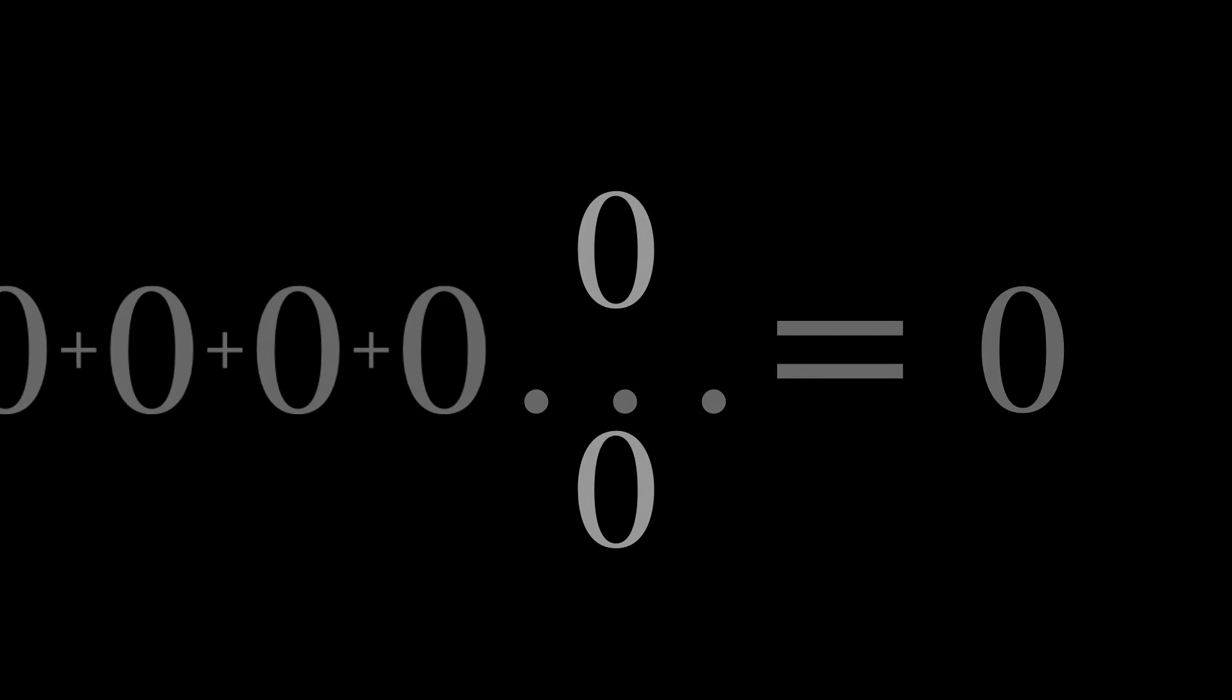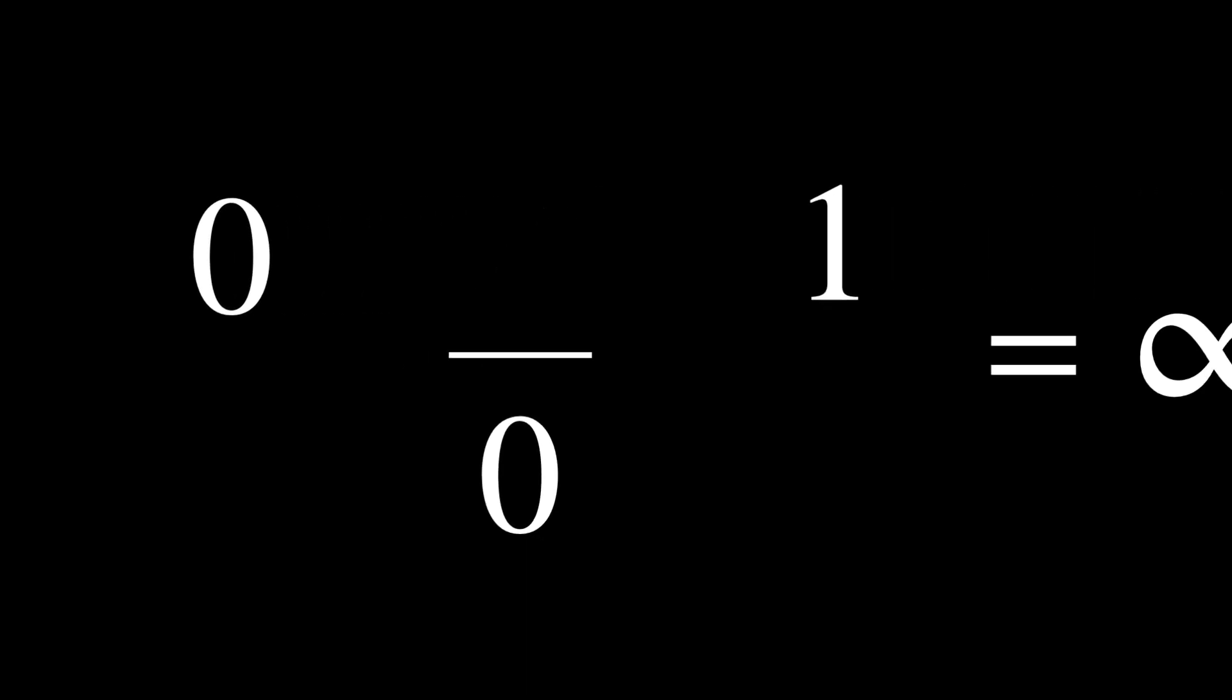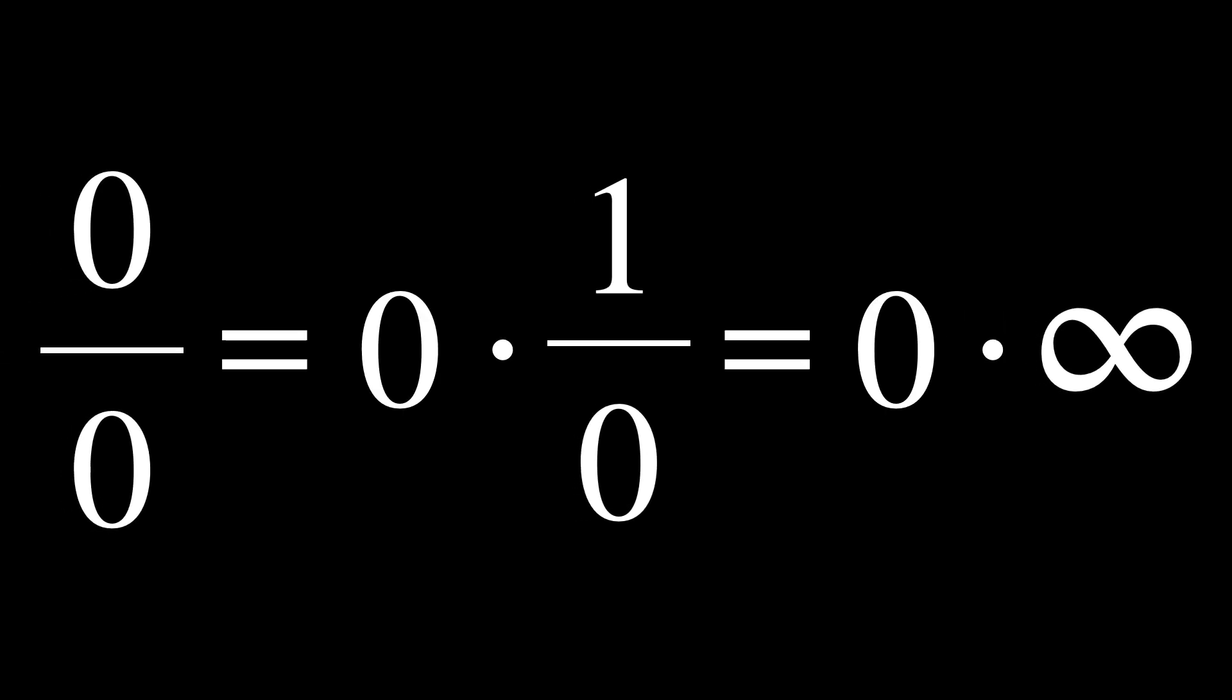Let's now consider zero times infinity, or infinity times zero, which is the same thing. I mean, isn't that the same thing as adding zero an infinite number of times? So shouldn't the answer be zero? Well, no. We will again use the same 0 over 0 form to prove this. We already know that 1 over 0 equals infinity. Now 0 divided by 0 equals 0 times 1 divided by 0, which is equal to 0 times infinity. Since 0 divided by 0 is an indeterminate form, 0 times infinity is also an indeterminate form.